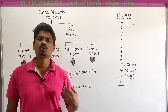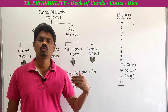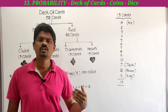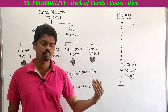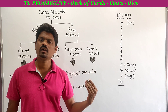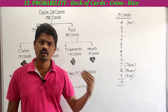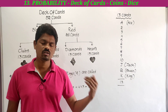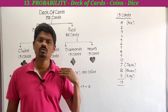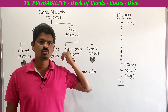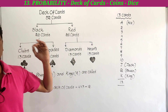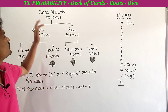Hi, hello, welcome to our channel. Today we are going to learn about a deck of cards and the total number of possible outcomes when a coin is tossed or a die is thrown. So these things we have to learn today. See here — a deck of cards. A set of playing cards consists of 52 cards.